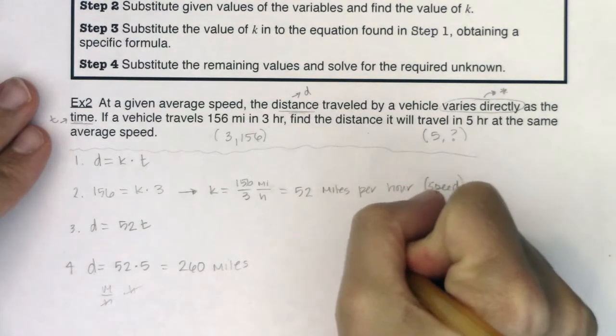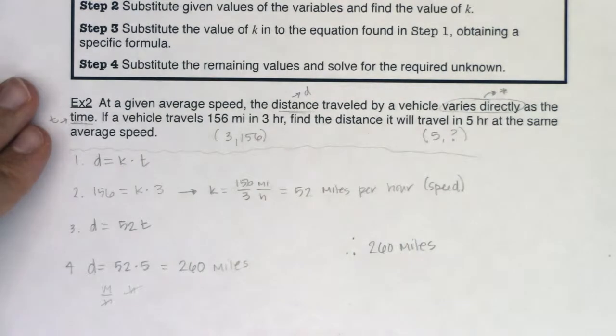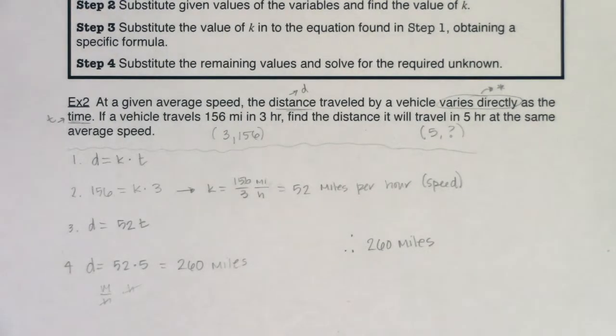So your answer for this one is in five hours this vehicle is going to travel 260 miles. All right, so with that, let's flip the page to the next example and we're going to start to unpack inverse variation. All right, I'll see you in a bit. Bye.